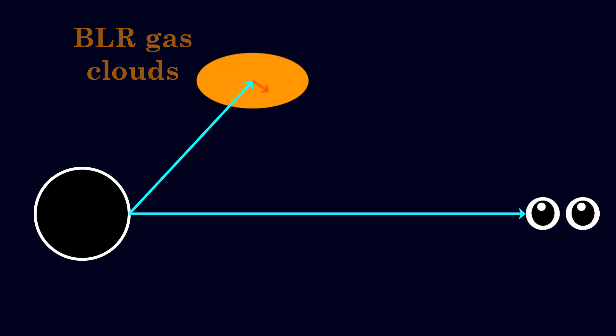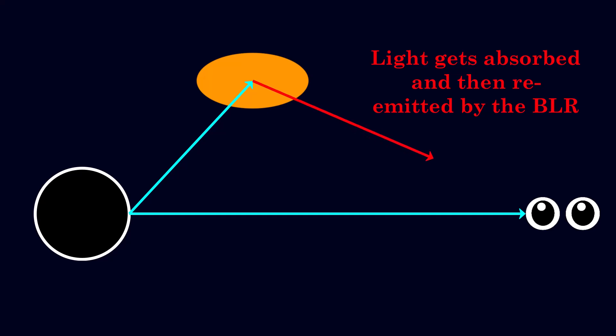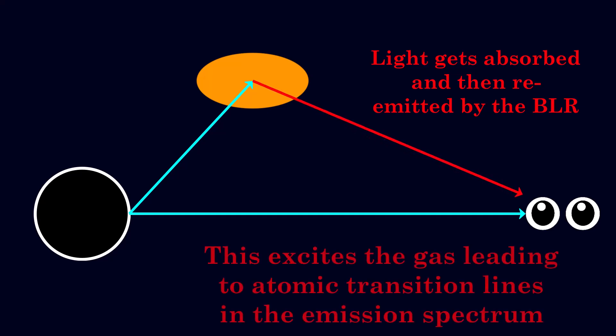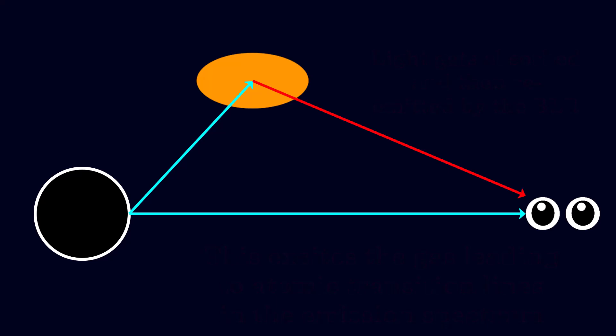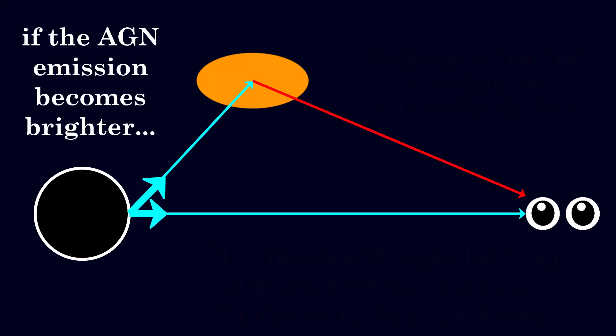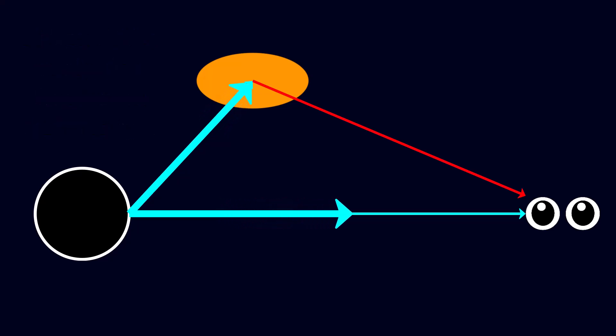So what we are seeing is a combination of the light directly from the AGN, which builds up a continuum, and also reprocessed light from the broad line region, which typically gives the emission lines of different atomic transitions. Then when the AGN emission varies in brightness or frequency over time, we are quick to observe it in the continuum emission.